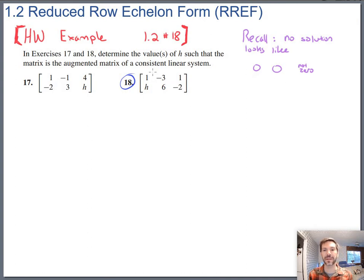So we just want to make sure that does not happen on 18. To find out when that will or won't happen we need to reduce the matrix. So let's go ahead and start doing that. We need to start by putting a 0 there. If that was a 5 instead of an H, we'd know what to do. We'd just do negative 5 times the first row added to the second row.